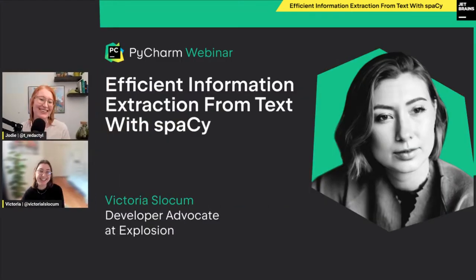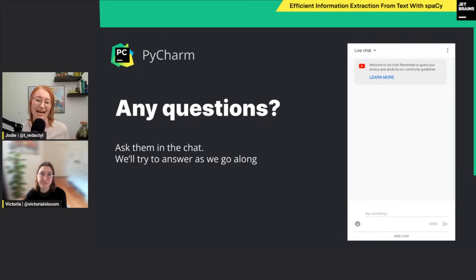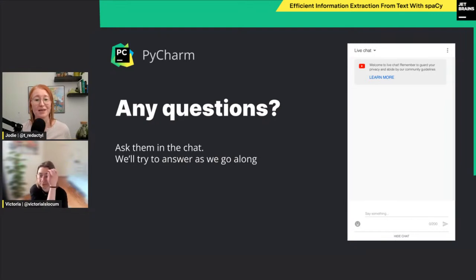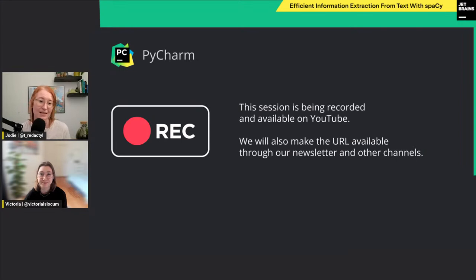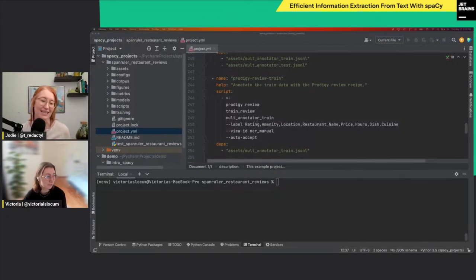Let's move on to the demo. A little bit of admin first: we'd like to keep this webinar as conversational and interactive as possible. If you have questions or issues during the webinar, please let us know in the YouTube chat. I'll be keeping an eye on the chat and we'll have pauses where Victoria can answer questions. This webinar is being recorded and will be available right after it ends on YouTube. So let's hand over to Victoria — she'll show us what we can do by coupling machine learning and manual annotation using spaCy and Prodigy.